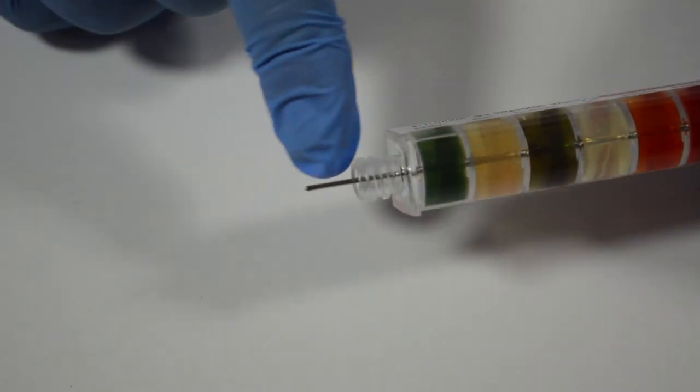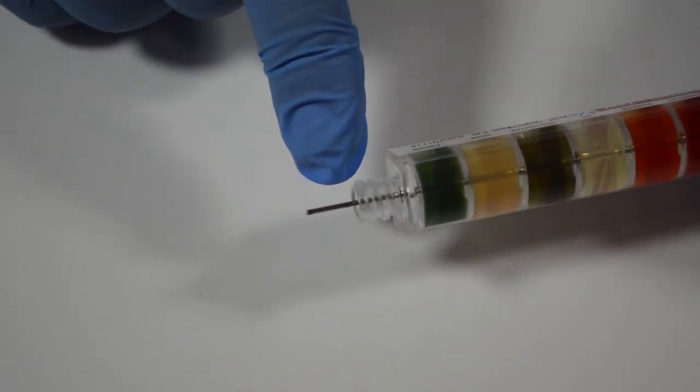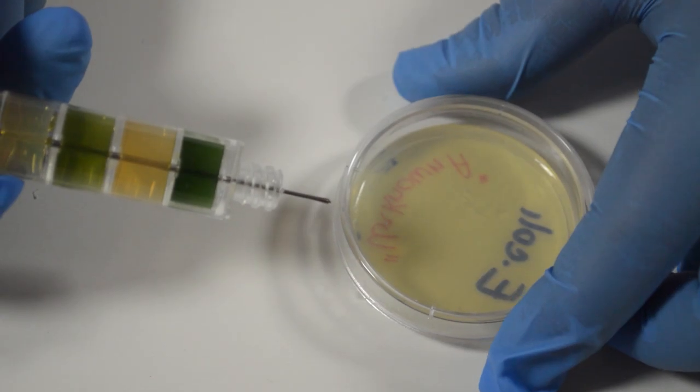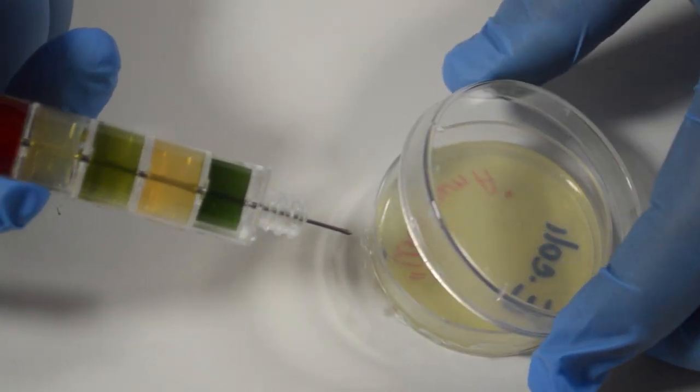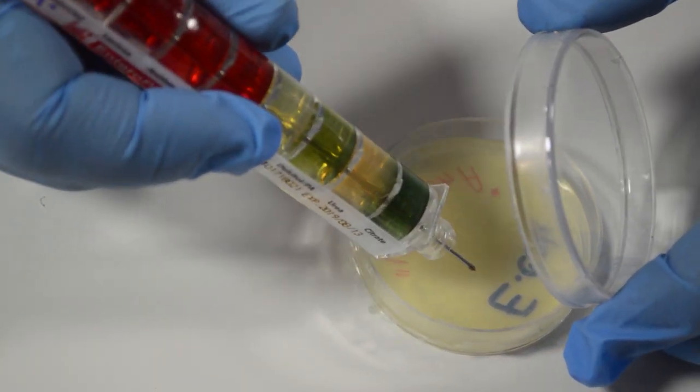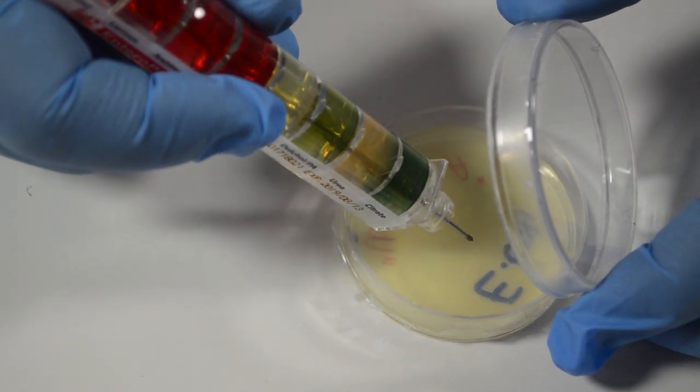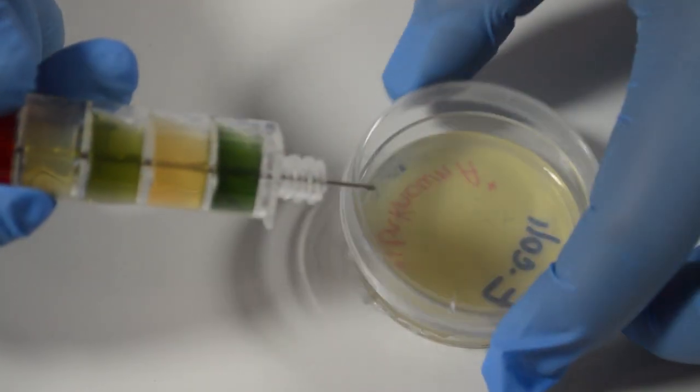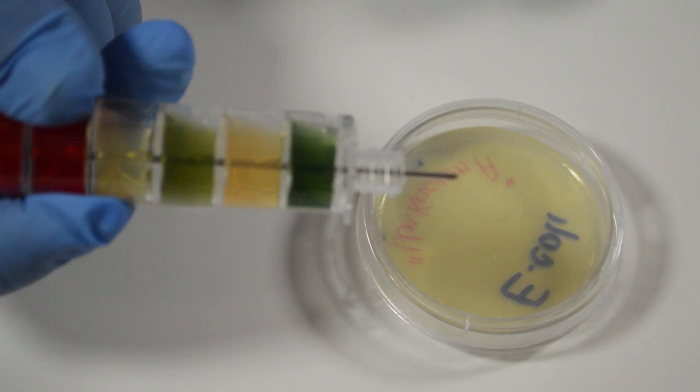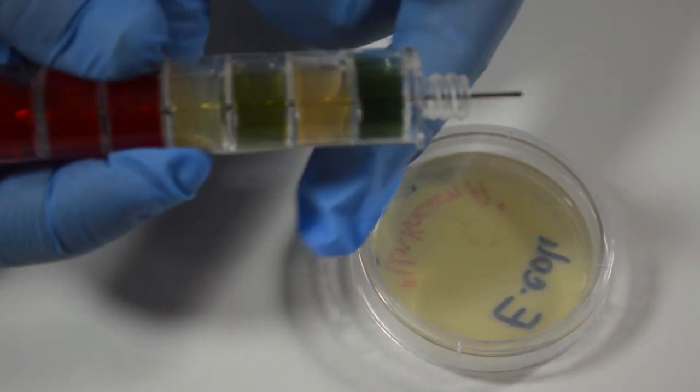We take the petri plate with a pure culture of the bacterium to be identified. We open it up and we don't want to open it too much. Then we are going to gently rub the needle on the colony to gather some of the bacterium sample on the end of the needle. We close the petri plate.